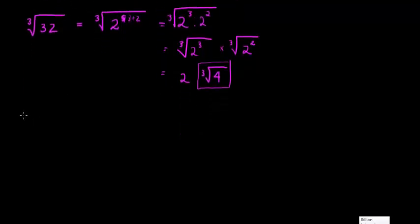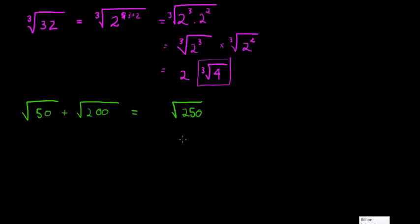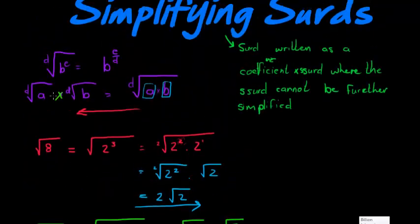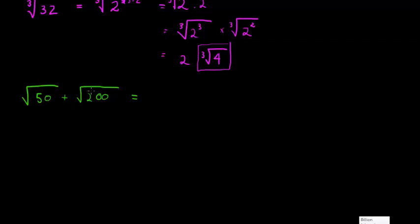Let's do one more: simplify the square root of 50 plus the square root of 200. You might think that since the radicals are the same you can add the insides to get the square root of 250, but that's not true. Our rule says when we're multiplying two radicals we can multiply the insides — that's not what's happening here. Since we're adding, we need to simplify each separately first.